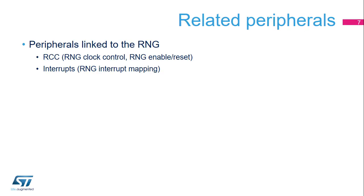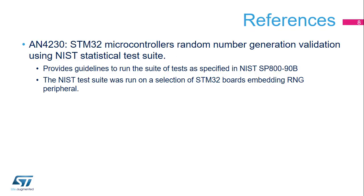This is a list of peripherals related to the random number generator. Please refer to these trainings for more information if needed. For more details, please refer to Application Note AN4230 about using the NIST Statistical Test Suite to validate the random numbers generated by a selection of STM32 MCUs.